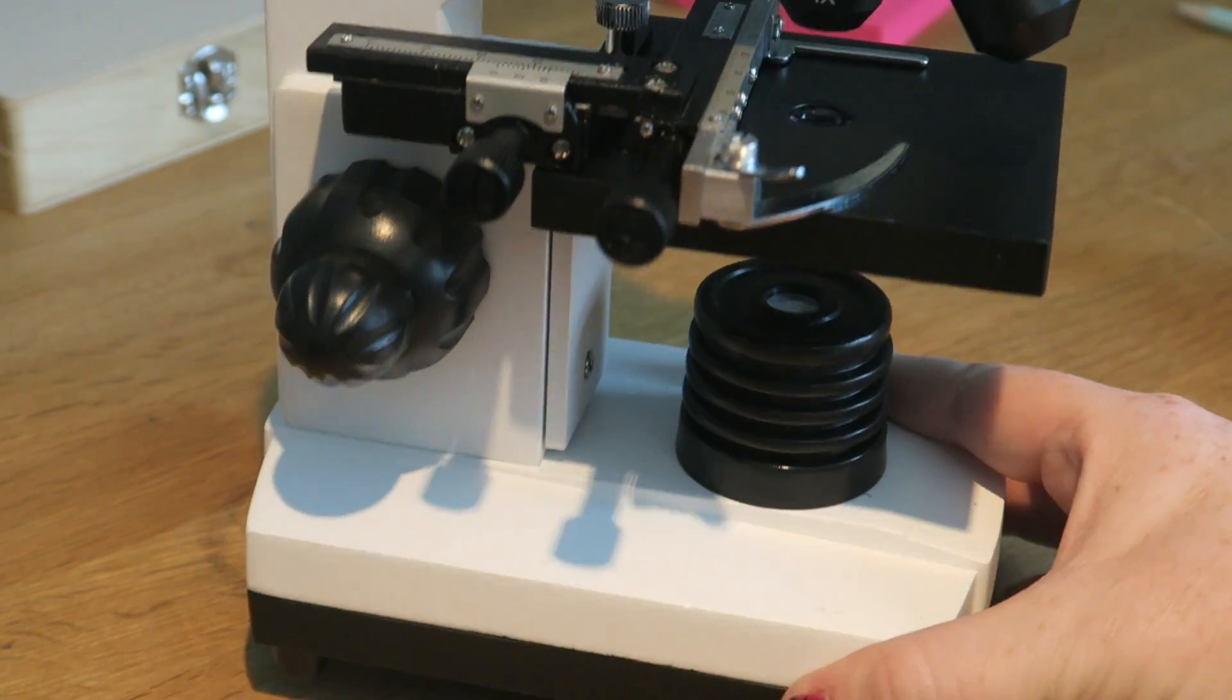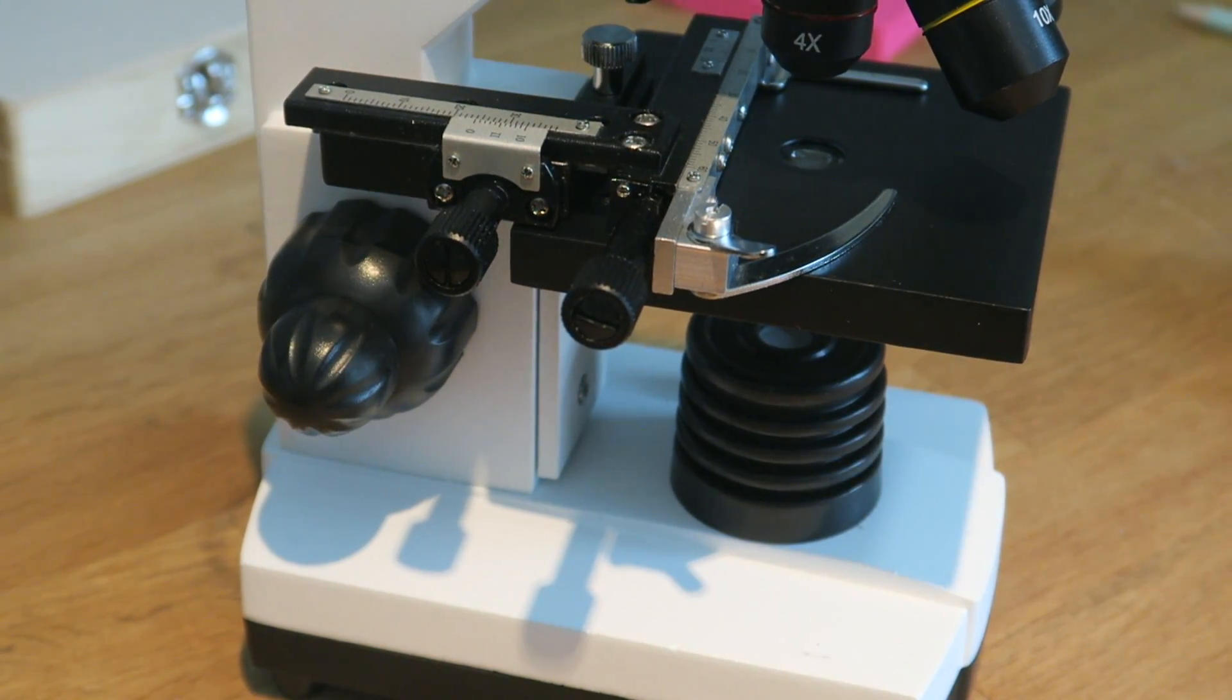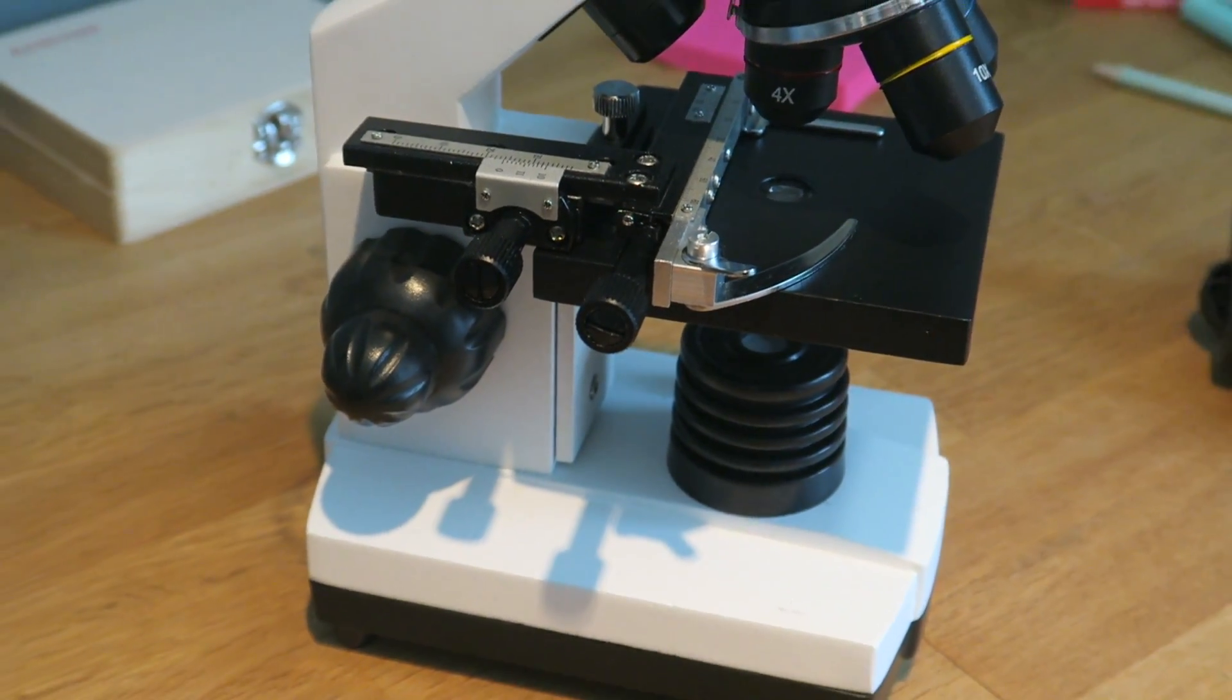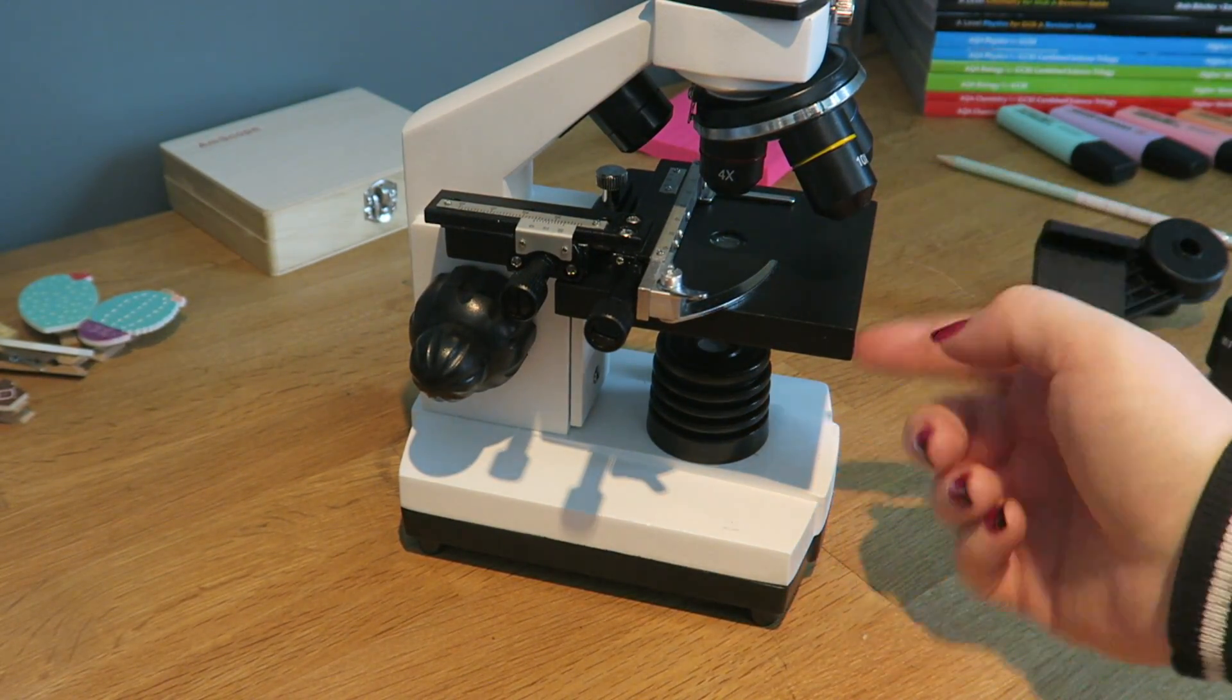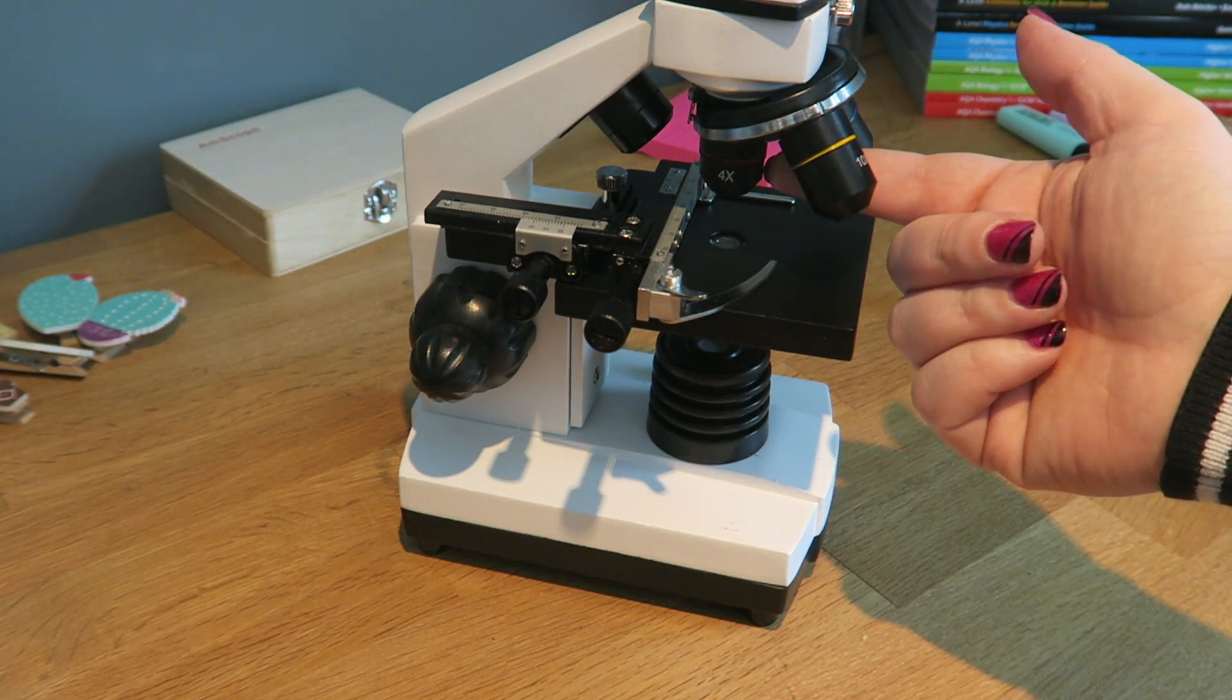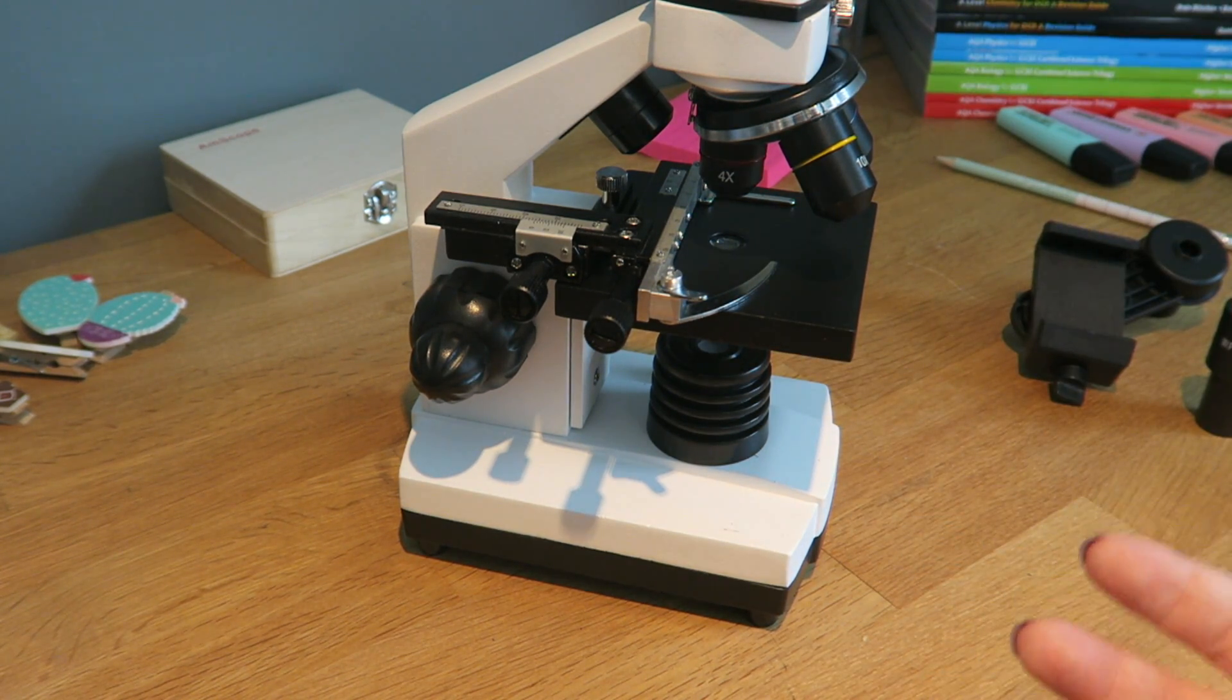Down here on the microscope, we have a lamp. That is going to allow light to travel upwards through your slide, which is on here, into the eyepiece, into the lens, so you can actually see what is going on.